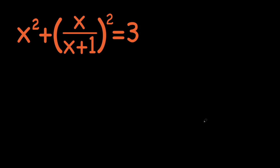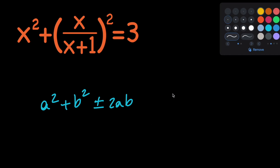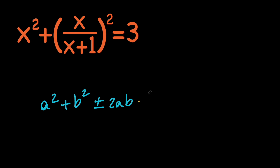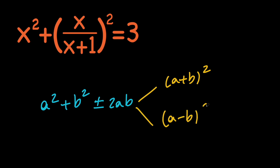First of all, notice that we have a sum of two squares on the left hand side, and whenever we have something like this, it's a good idea to complete the square. So what do I mean by that? Well, let's say that we have something like a squared plus b squared. We can try to complete the square by adding or subtracting 2ab, because once we do that, we're going to get a perfect square. So if we add 2ab, we get a plus b all squared, and if we subtract 2ab, we get a minus b all squared.